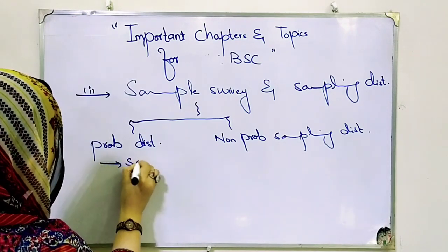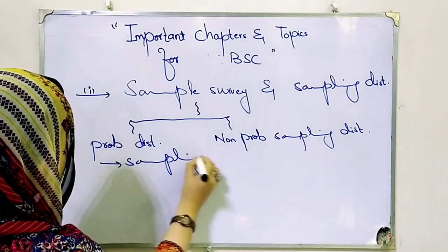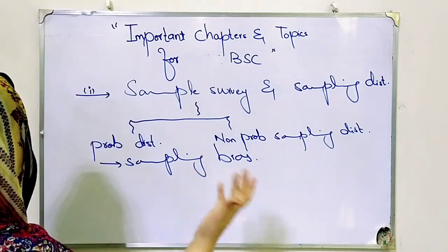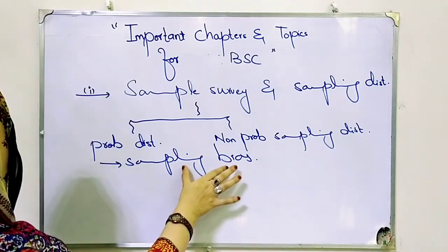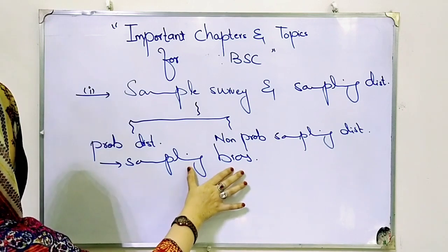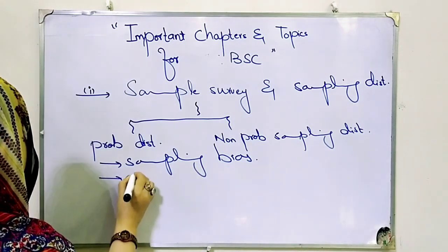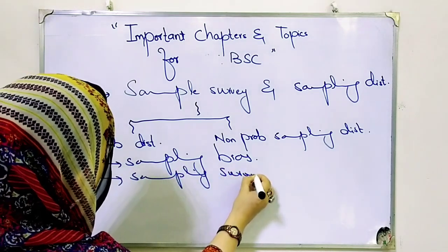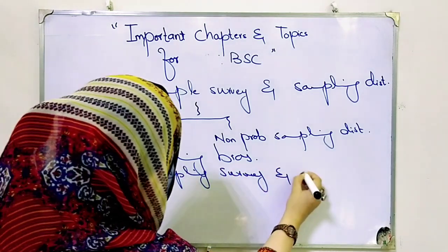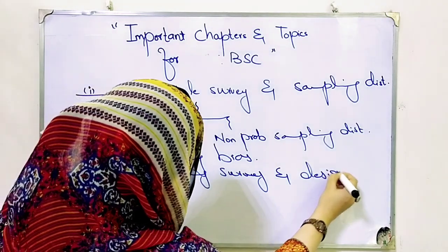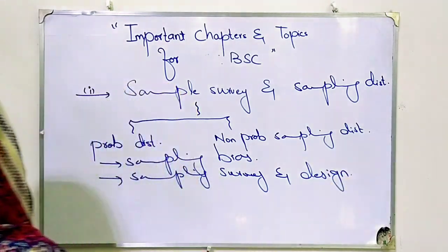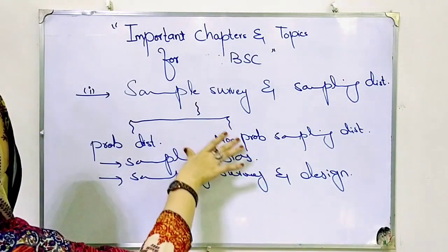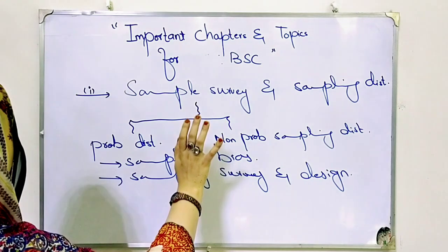What is sampling bias? The different kinds include deliberate selection and simple. You have to keep the kinds in your mind. In the same way, you need to know sampling survey or sampling design — what is a sampling survey and design? You need to know the main objectives. The theory is very important and related to your exam.